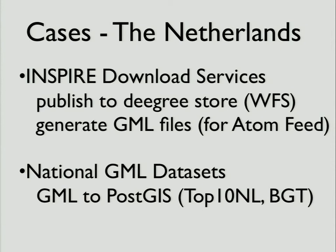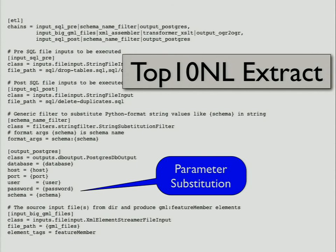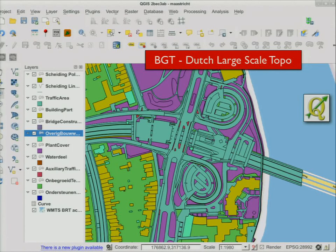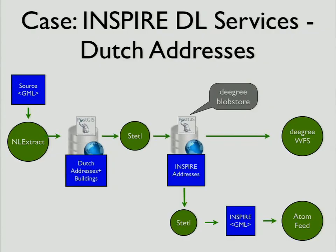There are two main cases where STETL is applied: INSPIRE transformation to generate harmonized data, and reading national GML datasets, mostly into PostGIS. This is a more extensive example — for instance, Top10NL, which is the national Dutch topo dataset. It's a more extensive configuration file with multiple chains, for instance for initialization and setting up a database. All these parameters can be substituted on the command line with the STETL command, so they're not hard-coded. And of course, we should show maps. Recently we also did the BGT — that took a couple of hours — and then we could read the BGT into PostGIS. This has actually been used in PDOK. But recently they tried to switch over to FME, and that was one and a half years ago and they're still struggling.